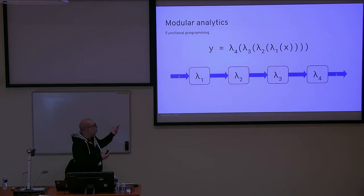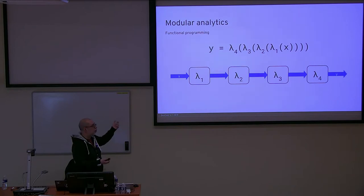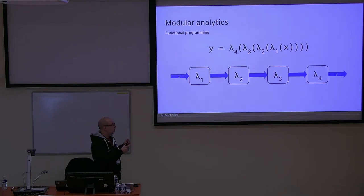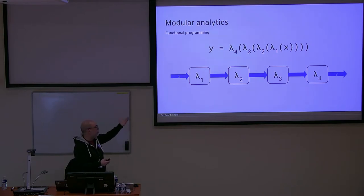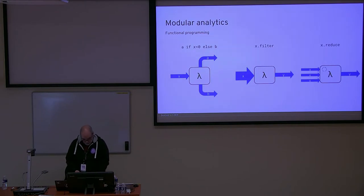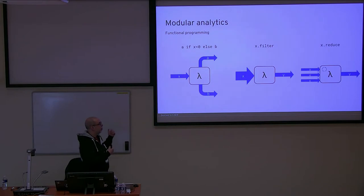You can even think of referential transparency as in functional programming — you can take one of these services and replace it with two services that overall do the same thing. You can replace Lambda 2 with two further services, and the application will have the same functionality without changing anything else. You have lots of constructs with microservices that give you building blocks and primitives like in programming.